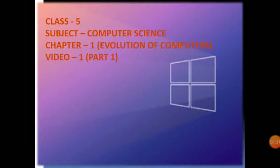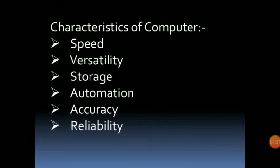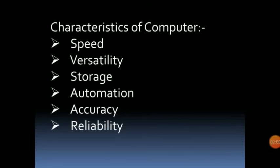Computer works by the help of software and hardware. Next are the characteristics of computers. There are many characteristics. Some of them are: speed, versatility, storage, automation, accuracy, and reliability. First is speed — a computer is a very fast device; it takes very few seconds to perform its work. Second is versatility — it refers to the capability of a computer to perform different kinds of work with the same accuracy and efficiency.